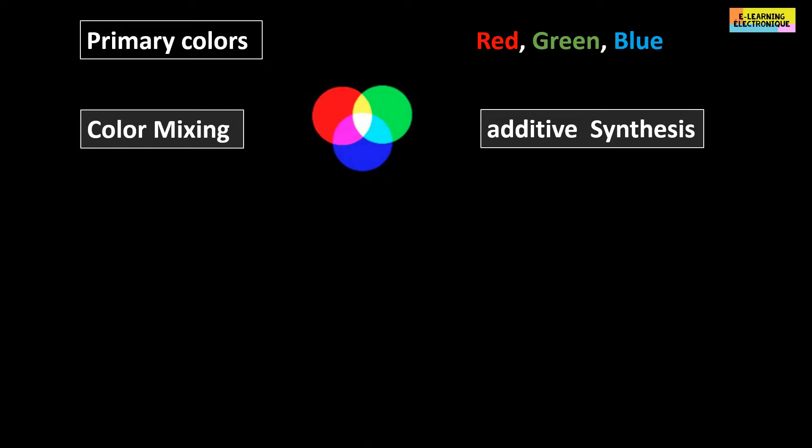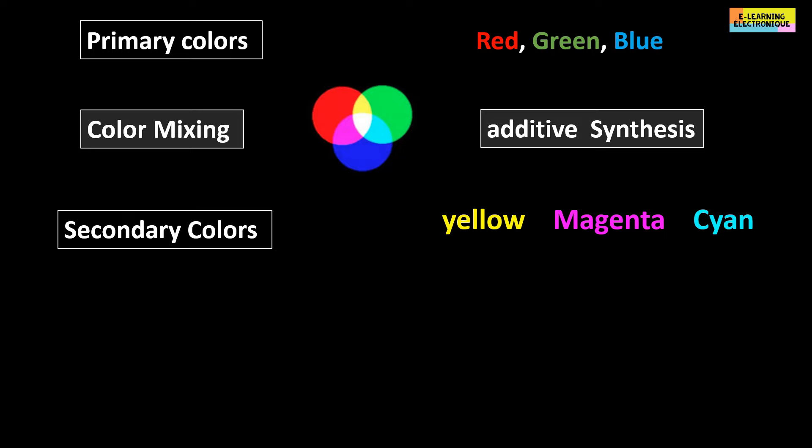Yellow, magenta and cyan are called secondary colors. One names complementary color that it is necessary to add to a secondary color to obtain white.